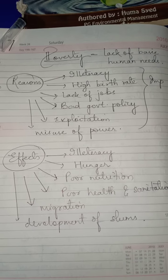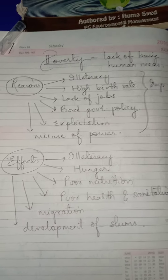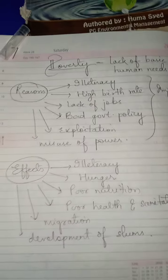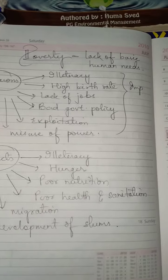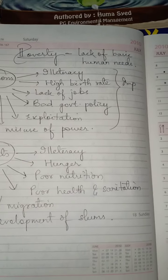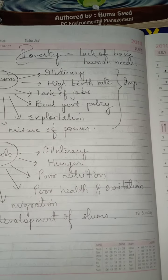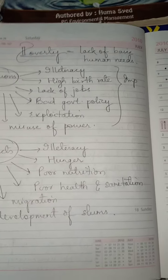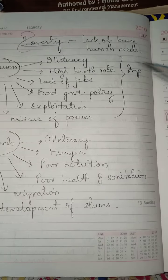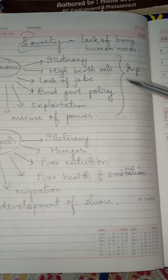High birth rate, or the number of mouths to be fed in a household, also causes poverty. There is one source of income from a person whereas there are many mouths to be fed, which is also one of the reasons for poverty.